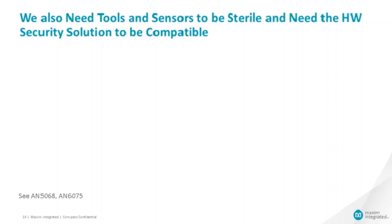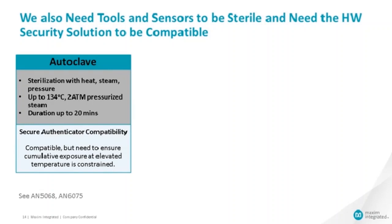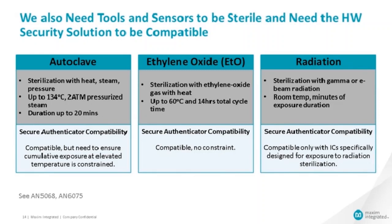One final point: medical tools need to be sterilized before use on humans. We must ensure our authenticator ICs are compatible with the sterilization environments used in the medical world. The three most commonly used methods are: autoclave — heat, steam, and pressure; ethylene oxide — lower temperatures and exposure times, though there are concerns about gas exposure to humans; and radiation — gamma or electron beam, which is also commonly used. Maxim's products are compatible with all of these sterilization environments.